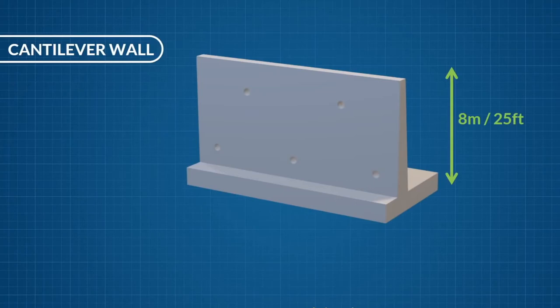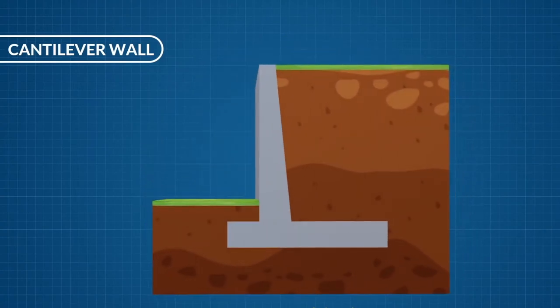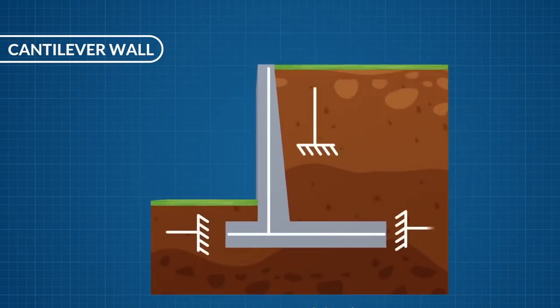For this wall type, the stem, toe and heel act as one-way cantilever slabs. The stem acts as a vertical cantilever under the lateral earth pressure.